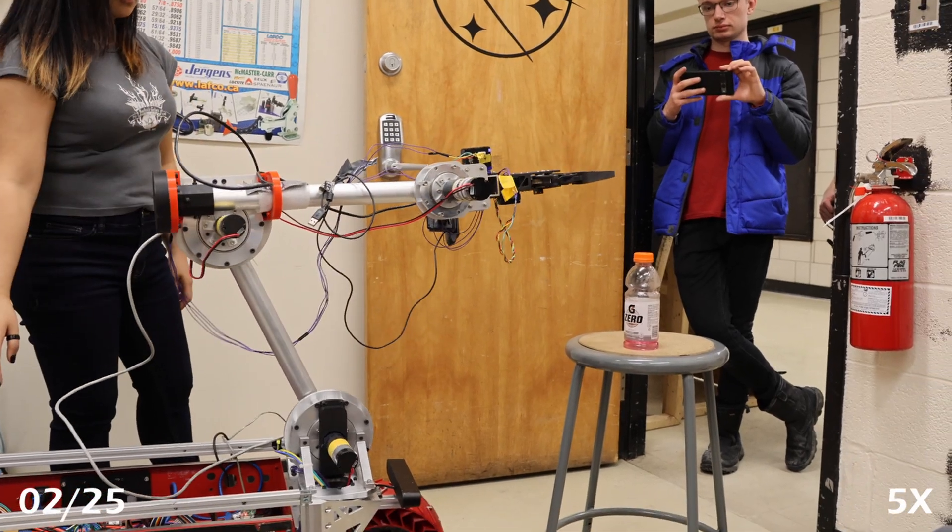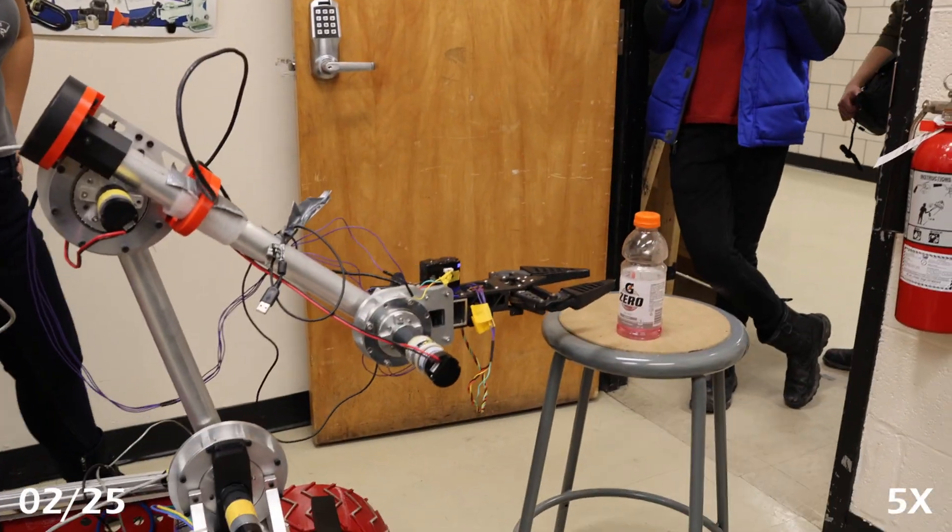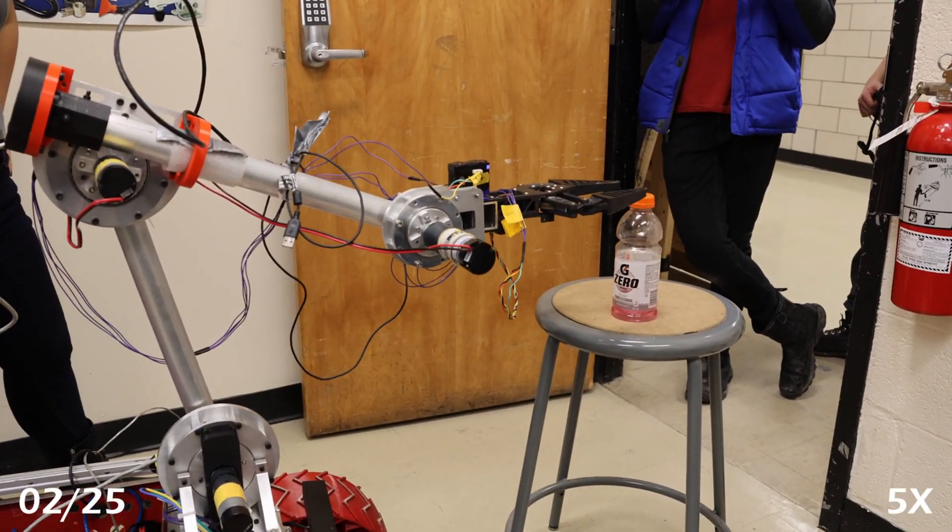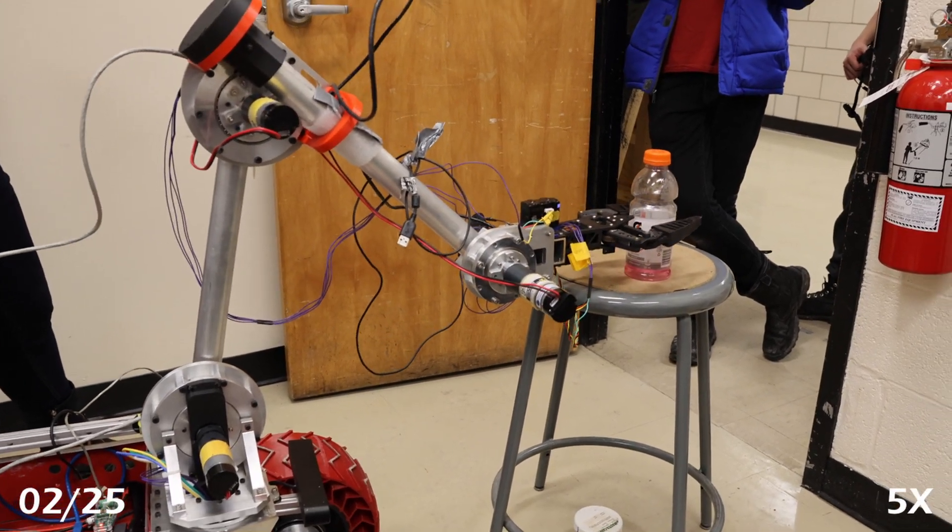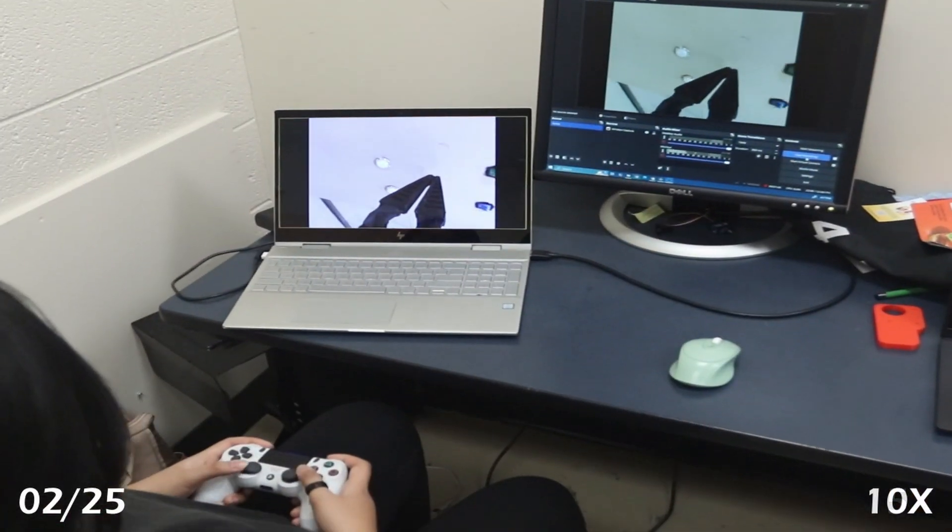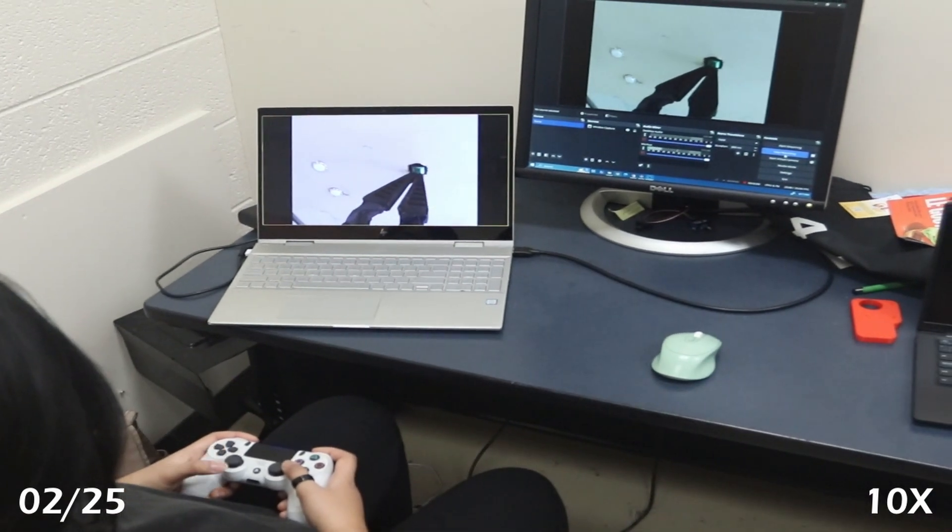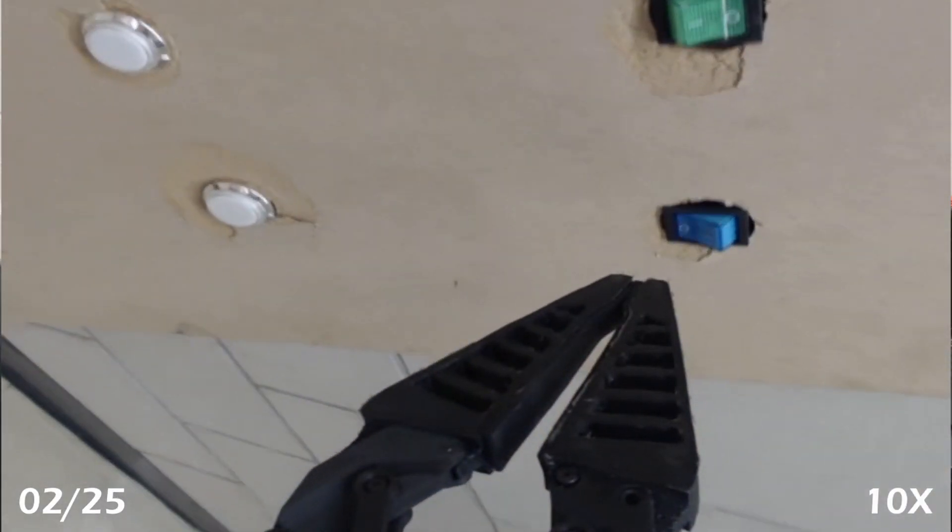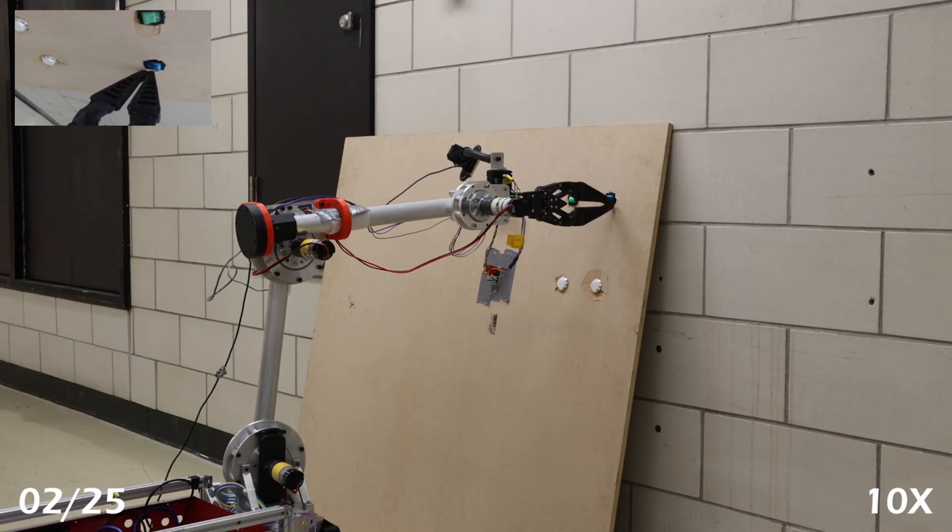The series manipulator has undergone significant upgrades this year, now featuring a 6R design that dramatically enhances its dexterity and precision. Operators control the arm remotely using live camera feedback, ensuring accurate task execution even from a distance.